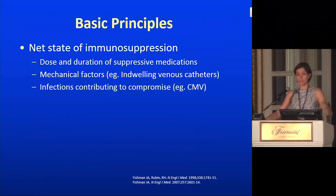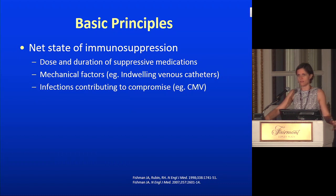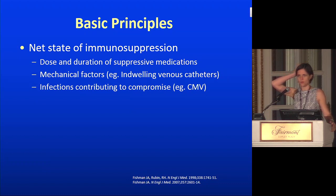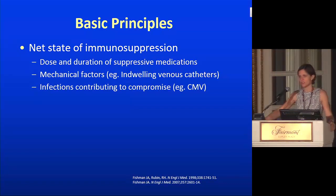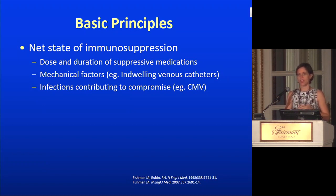In 1998, Jay Fishman and Bob Rubin wrote an important review article for the New England Journal laying out the basic principles of transplant infectious diseases. The first point is you have to understand the net state of immunosuppression when you think a patient has an infection. Obviously, you think about the dose and duration of immunosuppressive medications — not just maintenance immunosuppression, but also things like rituximab given three months ago or CAMPATH at induction, which put them at higher risk.